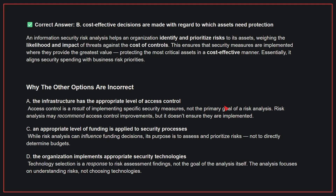Why are the other options incorrect? A: The infrastructure has the appropriate level of access control. Access control is a result of implementing specific security measures, not the primary goal of a risk analysis. Risk analysis may recommend access control improvements, but it doesn't ensure they are implemented.